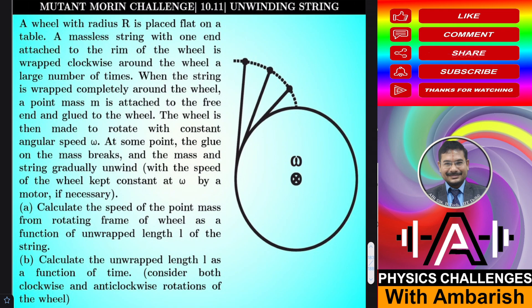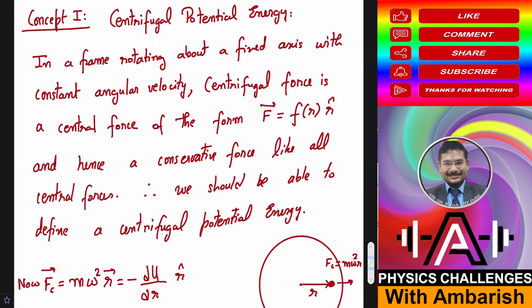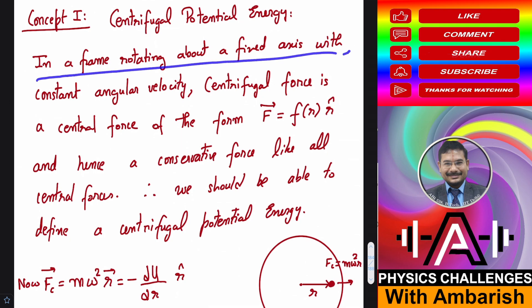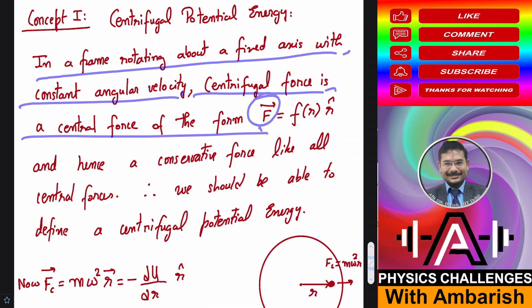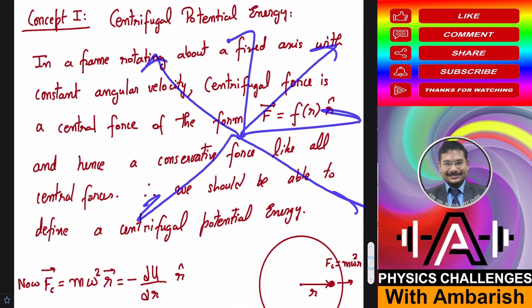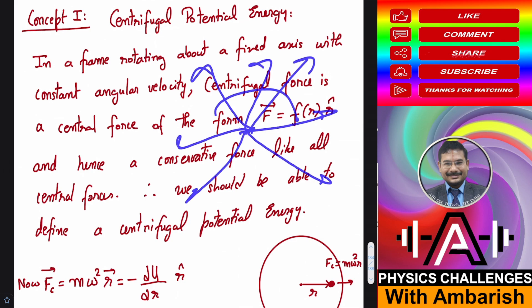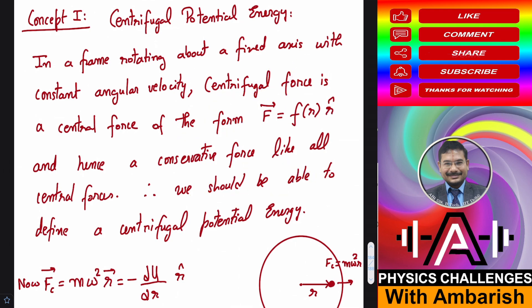Now let me get into the required concepts for this problem. The first concept is centrifugal potential energy. In a frame rotating about a fixed axis with constant angular velocity, the centrifugal force is a central force of the form F⃗ = F(R) R̂. Centrifugal force acts radially outward, and a force always directed away from or toward a point that depends only on the distance from that point is called a central force.